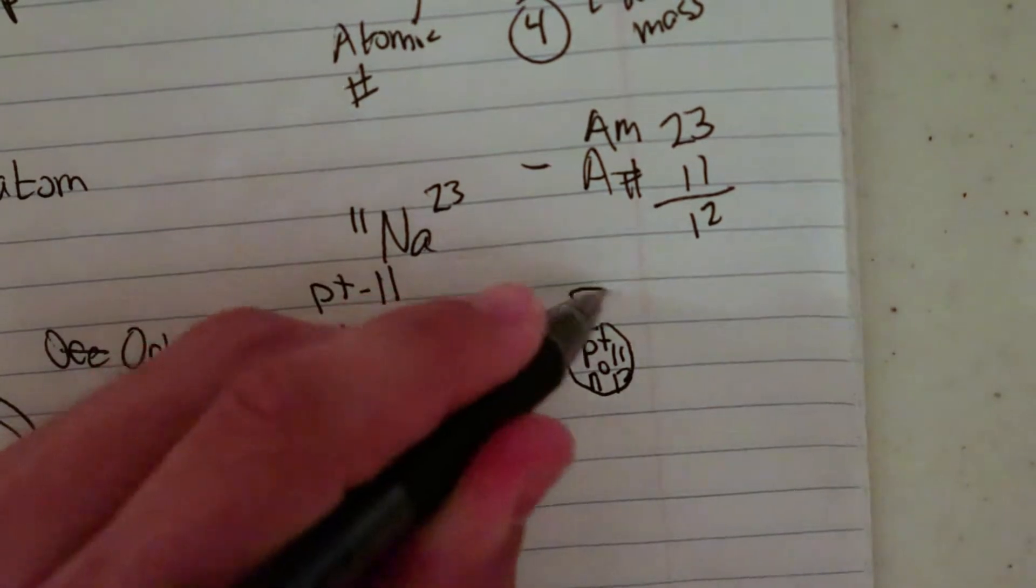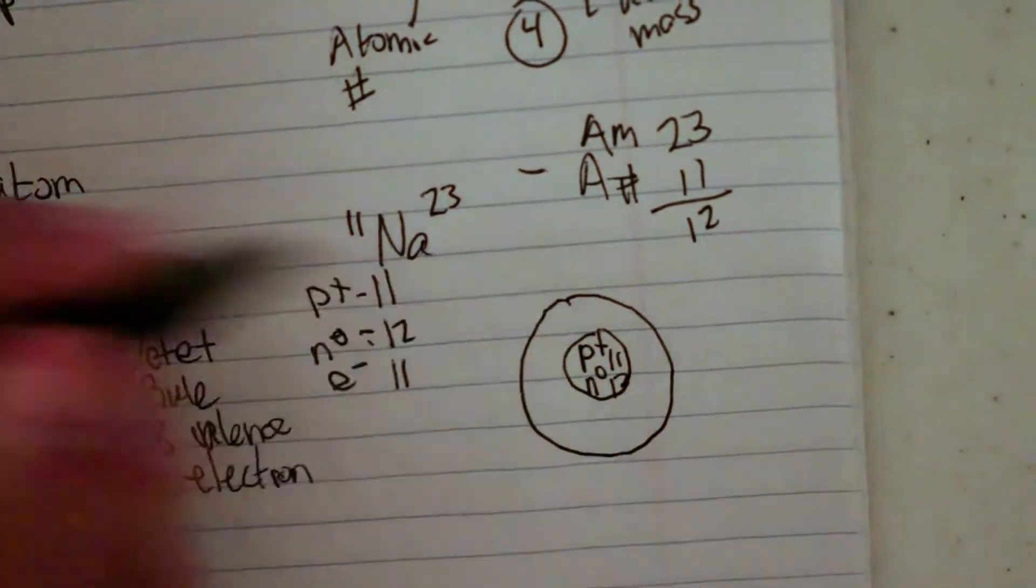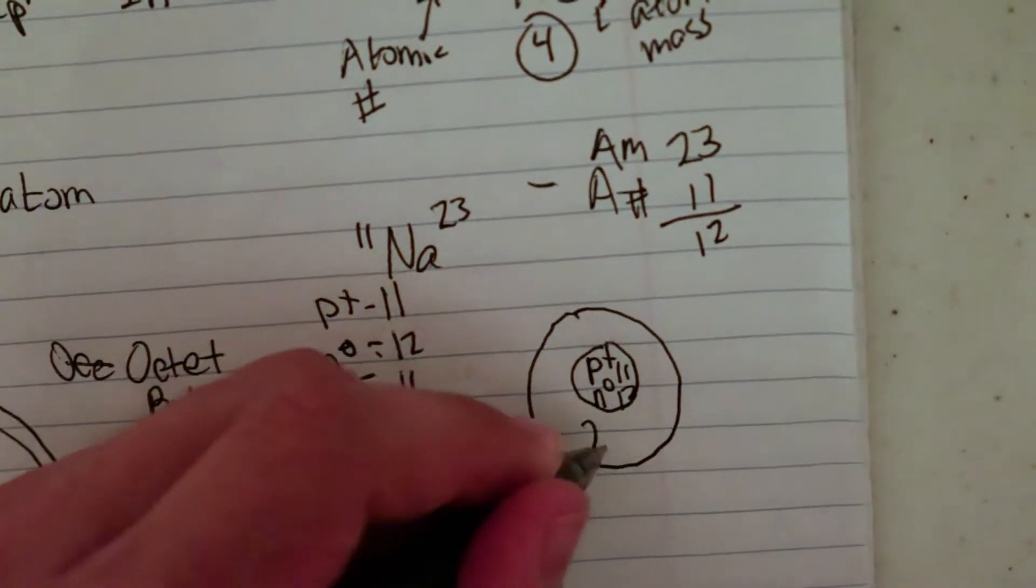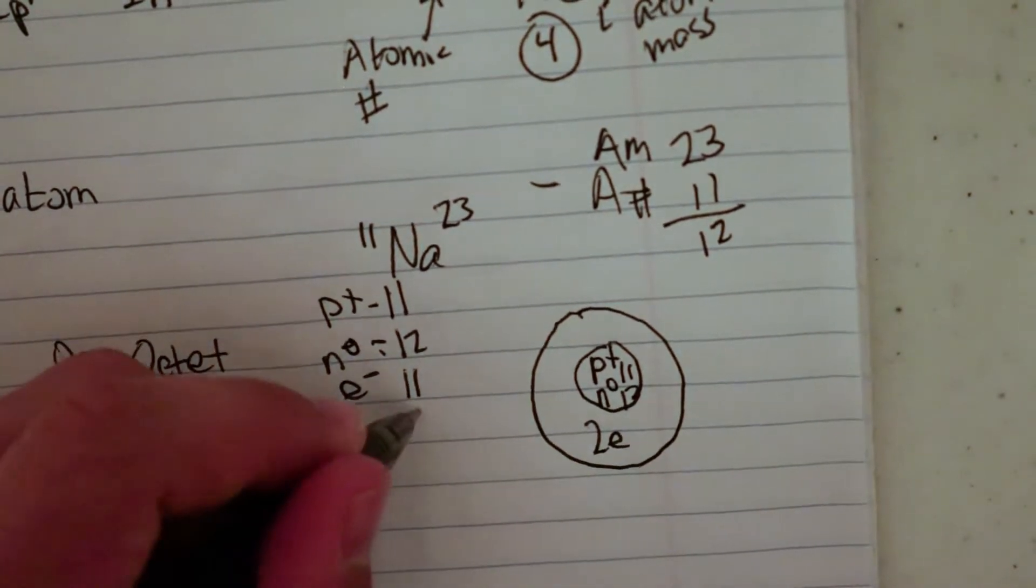So now I'm going to draw my first energy level here. Remember, the first one can take two. So two electrons in this one, and I'm going to subtract two here.